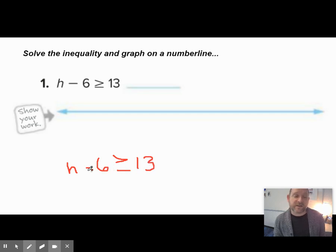So all of my values that come out of this side for h, when I subtract 6, they have to be greater than or equal to 13. So how I'm going to find all those values is I'm going to balance this equation.